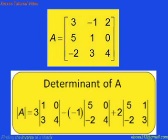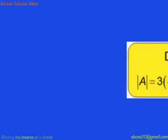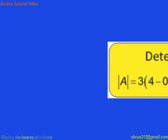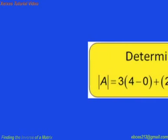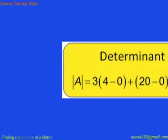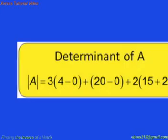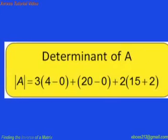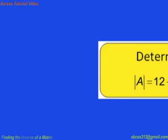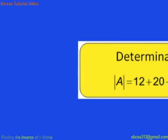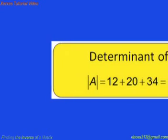Then we'll have positive 2 times the determinant of 5, 1, negative 2, 3. Computing this: 3 times (4 minus 0) gives 12. Then negative 1 times (20 minus 0) gives negative 20, which with the sign gives positive 20. Then 2 times (15 minus negative 2), or 15 plus 2, which is 17, giving 34. So we get 12 plus 20 plus 34, which is 66 as the value of our determinant.